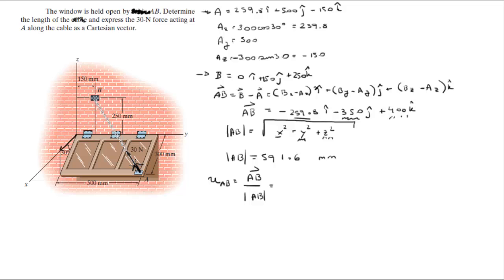And that is going to give you this tiny vector right here with a magnitude of 1. So the unit vector comes out to be negative 0.439 I minus 0.592 J plus 0.676 K.